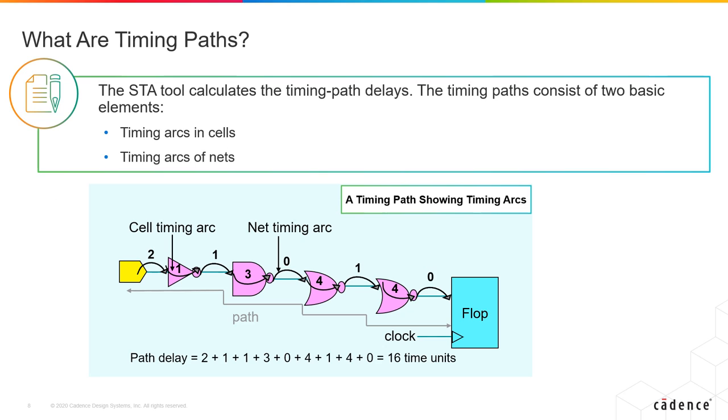As we've seen before, the STA tool is calculating the timing path delays. These timing paths mainly consist of two basic elements: the timing arc in the cells and the timing arcs of the nets. The goal in timing is to restrict the path delay to a certain amount as specified by the constraints.